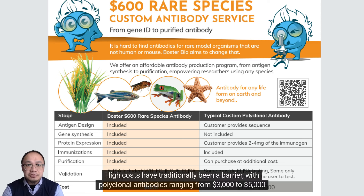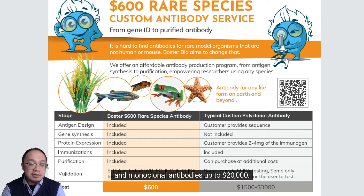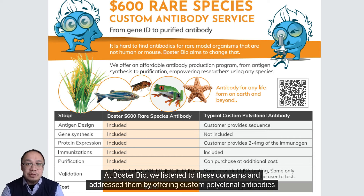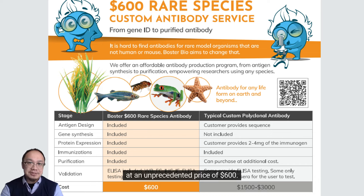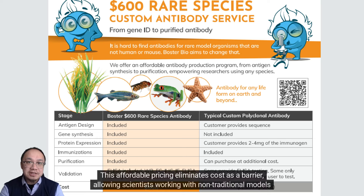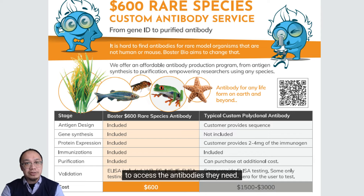High costs have traditionally been a barrier, with polyclonal antibodies ranging from $3,000 to $5,000 and monoclonal antibodies up to $20,000. At BosterBio, we listened to these concerns and addressed them by offering custom polyclonal antibodies at an unprecedented price of $600. This affordable pricing eliminates cost as a barrier, allowing scientists working with non-traditional models to access the antibodies they need.